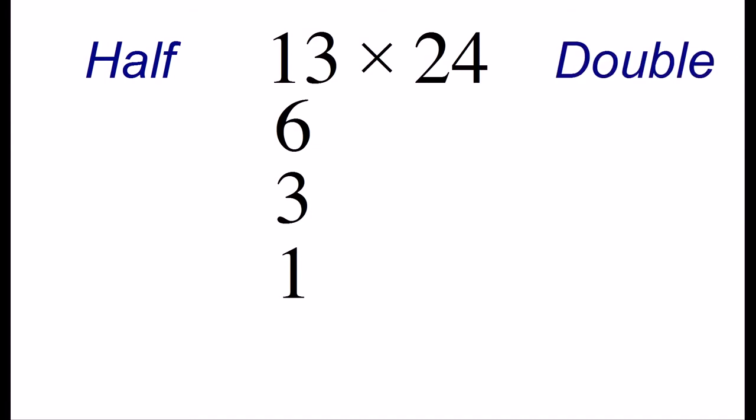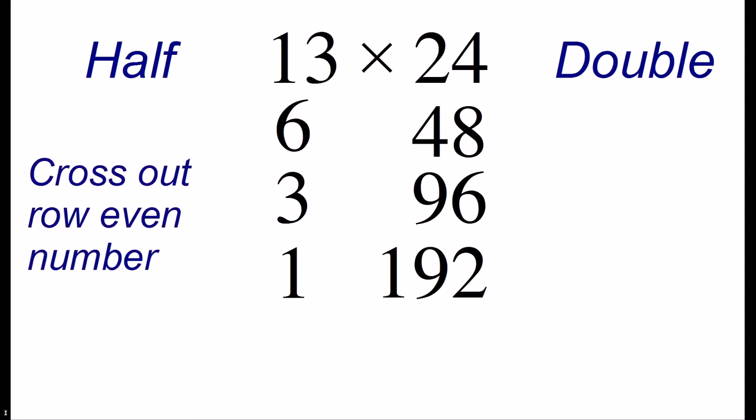The second step is to take the number on the right and keep doubling it. So the number 24 when doubled is 48. Then we're going to double this number again to get 96, and finally we double 96 to get 192. The third step is to modify our table by crossing out any row that starts with an even number. In our table, only the row that starts out with 6 is an even number, so we're going to cross out the entire row. The final step is to add the numbers in the right-hand column, so we need to add up 24, 96, and 192.